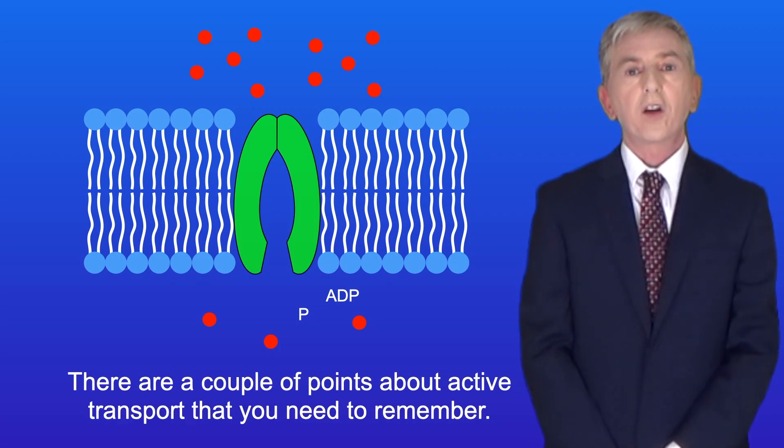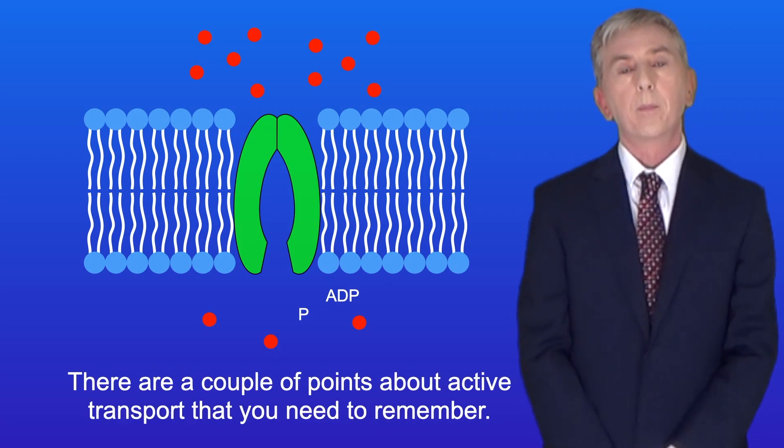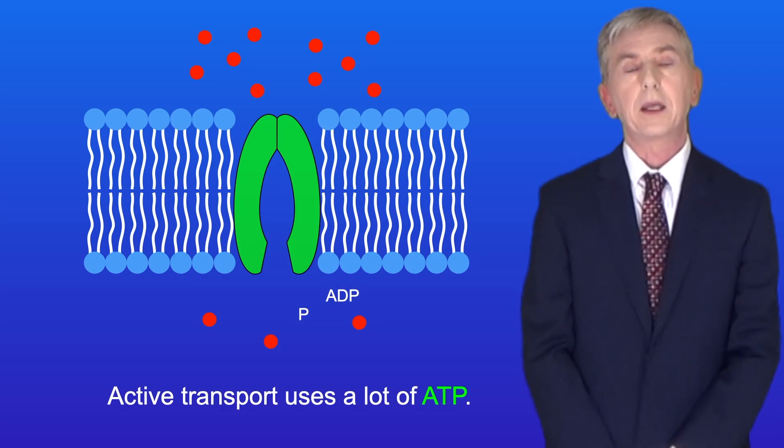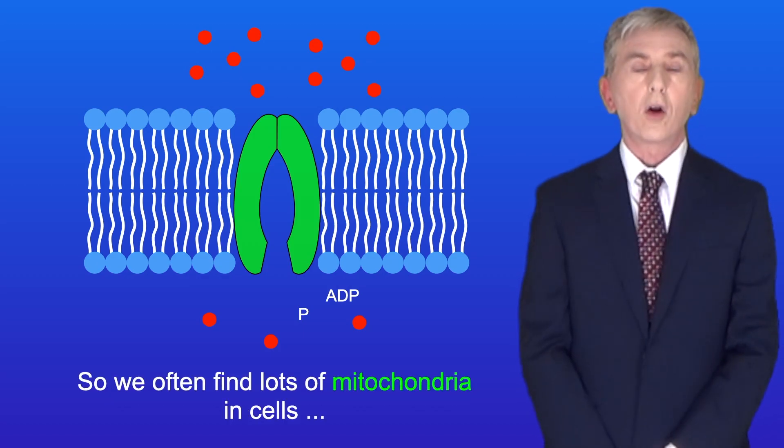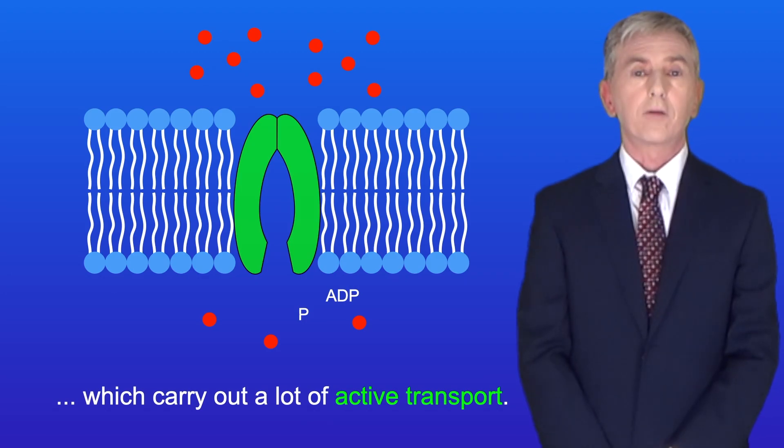Now there are a couple of points about active transport that you need to remember. Firstly, active transport uses a lot of ATP, so we often find lots of mitochondria in cells which carry out a lot of active transport.